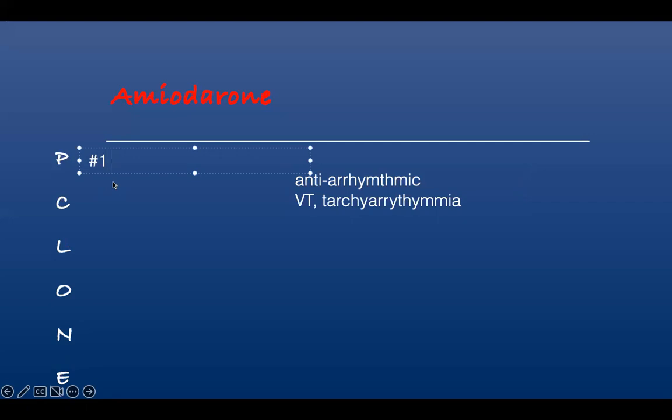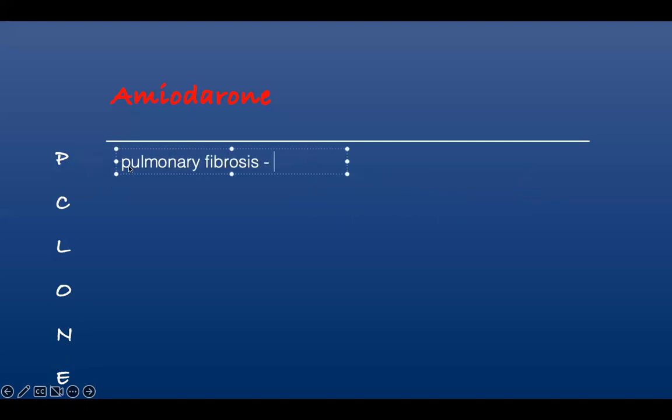This is the number one side effect of amiodarone. Pulmonary fibrosis. And this is number one. If you don't know anything at all, amiodarone causes pulmonary fibrosis. And how does it present? Dry cough, chest pain, periodic chest pain, dyspnea on exertion. And that's how the patient will complain. They've been on this medication for a long time and started having these symptoms. You should be worried about fibrosis from amiodarone.